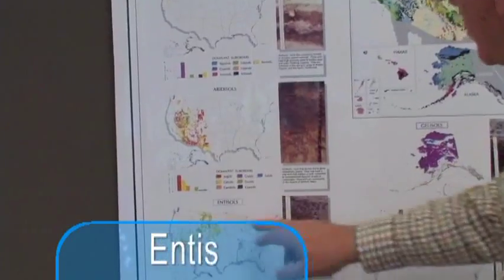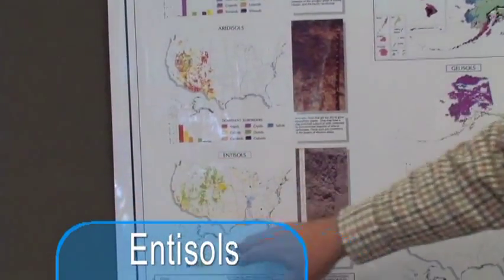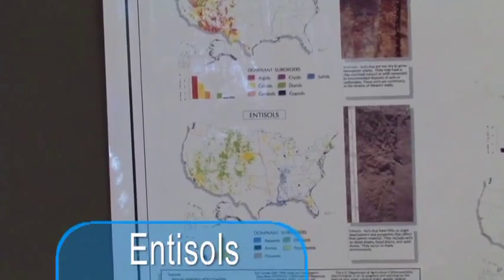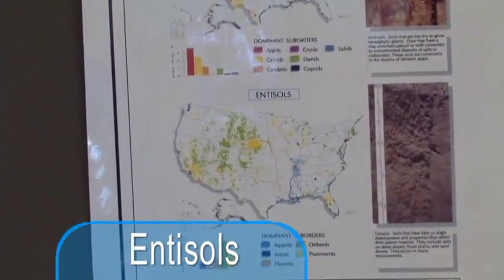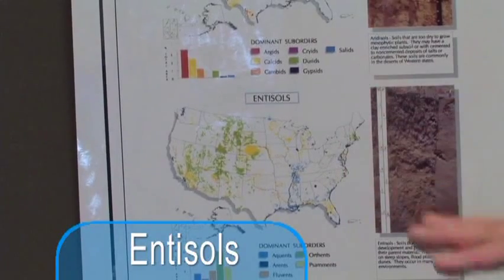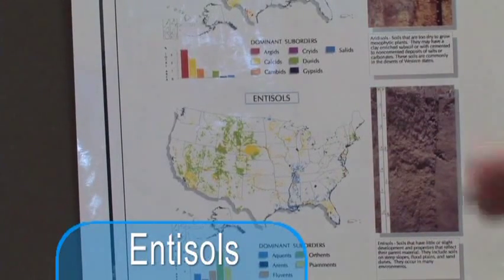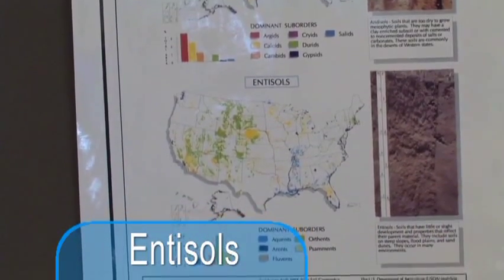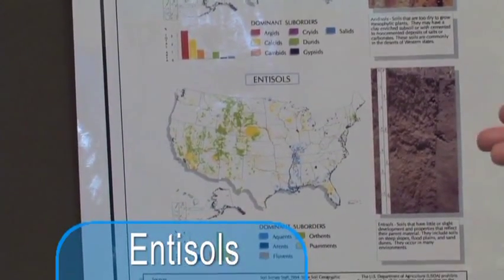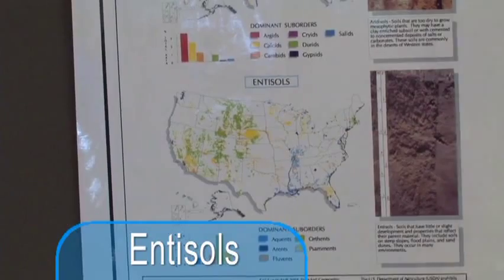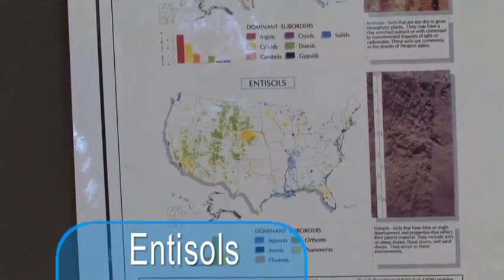The entisols, as you can see, represent a fairly broad area. They are young soils, rather poorly developed. It may be a result that these are alluvial outwashes from rivers or streams, and so they haven't had a chance to age and to develop the profile characteristics that we see for these other major soils.